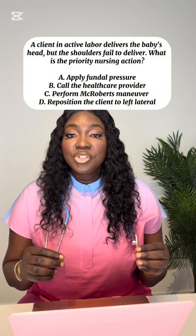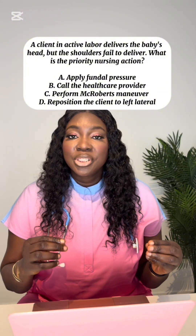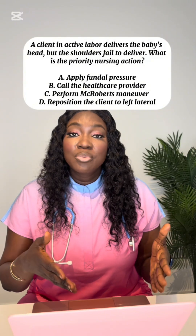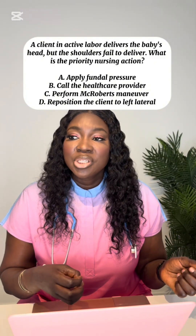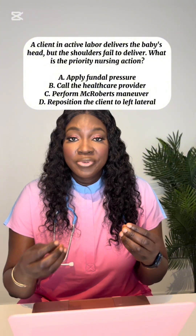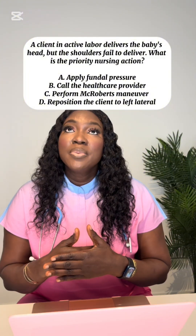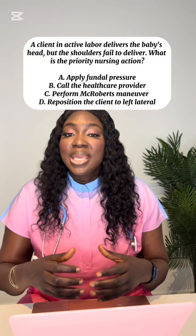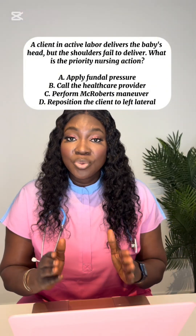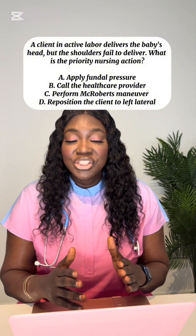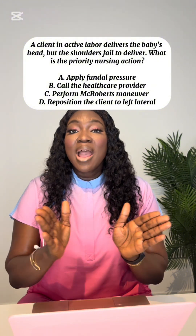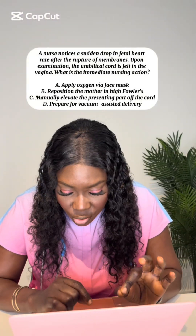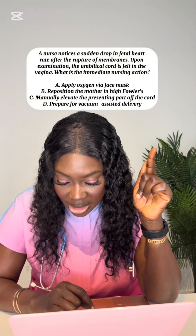Option D, repositioning the client to left lateral, is not appropriate here. Left lateral positioning is used to increase placental perfusion or for cord prolapse when the baby's head is pressing on the cord. In shoulder dystocia, the best action is the knee-to-chest position, which opens the pelvis for the shoulder to come out.